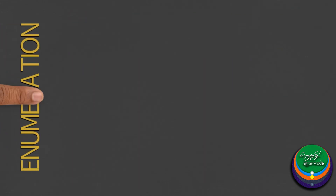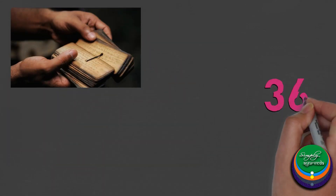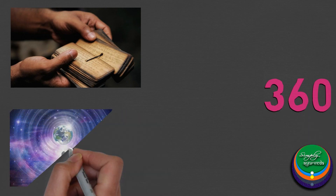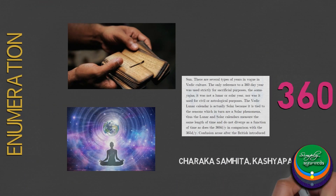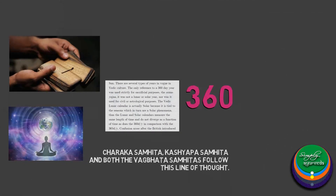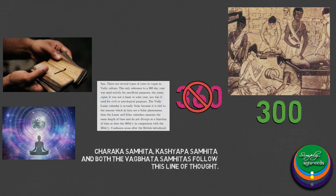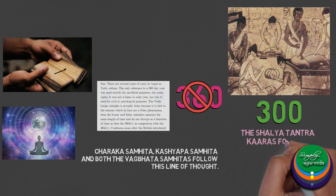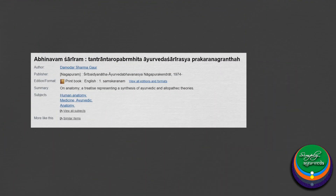Now we will come to the enumeration of bones according to different authors. There are mainly two views in the classical texts. The Vedas describe that there are 360 bones in the body, based on the Loka Purusha Samyavada, wherein the total number of days in a Samvatsara is 360. Charaka Samhita, Kashyapa Samhita and both the Vagbhata Samhitas follow this line of thought. The Shalya Tantrakaras from the Dhanvantari Sampradaya reject this and mention 300 bones. Later texts like Abhinavasharira also mention the western anatomy enumeration of 206 bones.